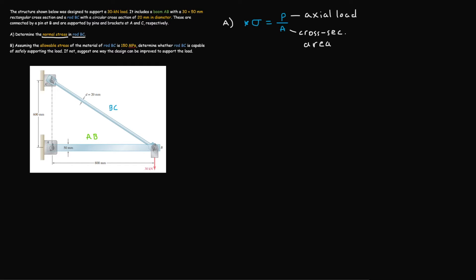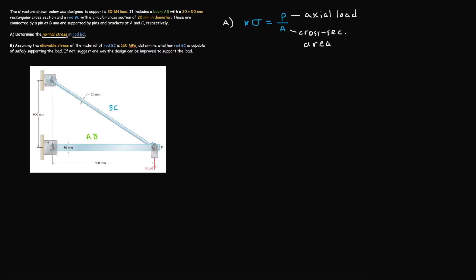Consider a cut perpendicular to rod BC. From this cut we will have a cross-sectional geometry, and the axial load will be represented by an arrow that is normal to this cross-sectional area — hence why we get normal stress from this normal force. Now that we've reviewed normal stress, we can move on by sketching a free body diagram of our system, just like in statics, to find all the unknown forces.